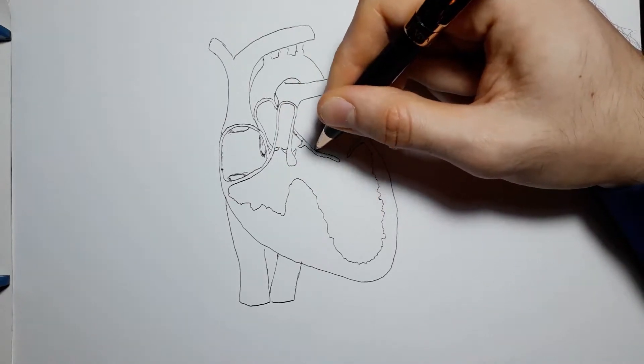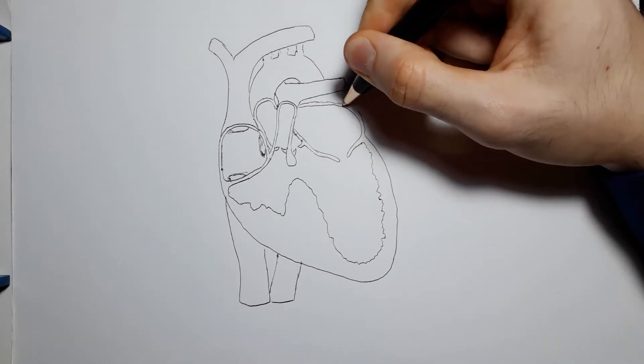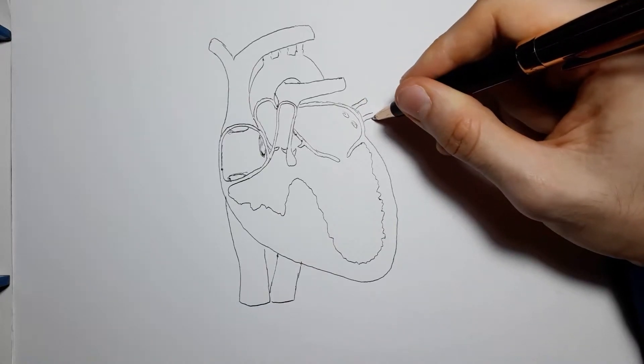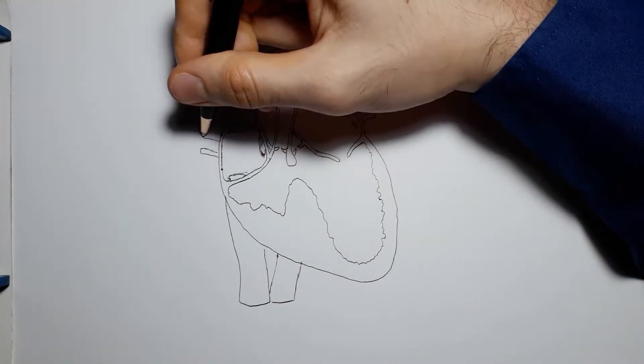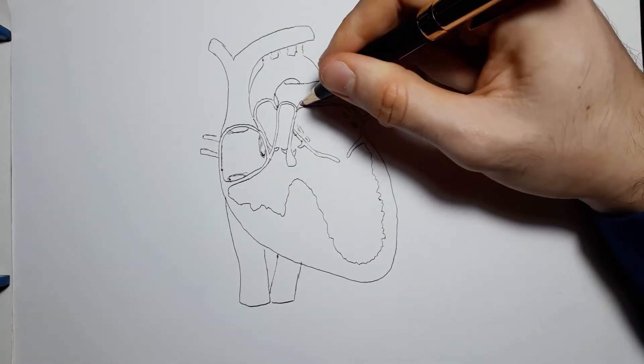So, as I found out in med school, tricuspid atresia is a cyanotic heart disease, because there is no communication between the right atrium and the right ventricle. There is no tricuspid valve and there is no hole, there is just a wall.